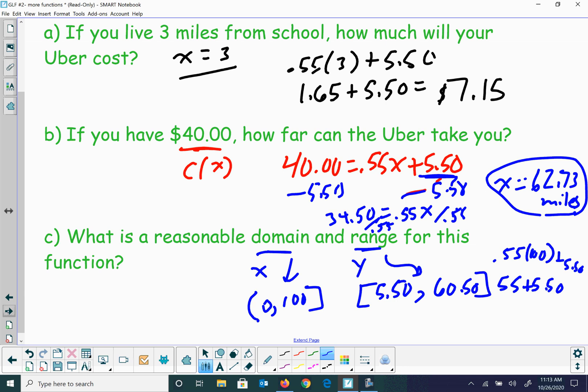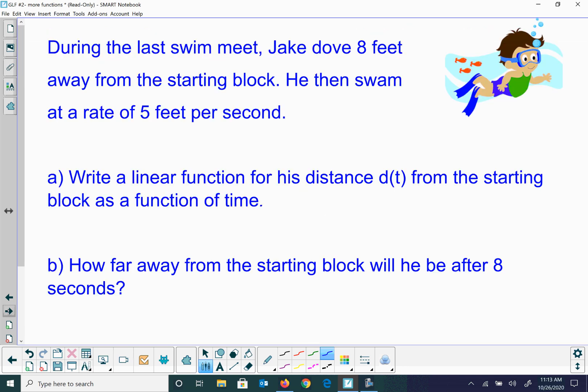During the last swim meet, Jake dove 8 feet away from the starting block. He then swam at a rate of 5 feet per second. So we're gonna call this s(t) for swimming, so he's gonna swim at 5t, five feet per second.